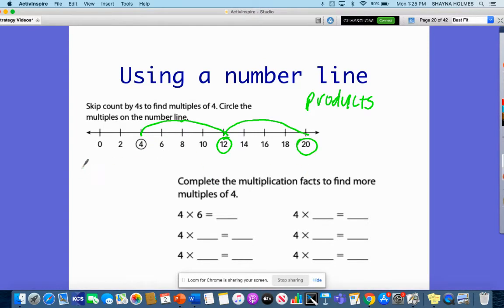Four is a multiple of four, because four times one is four, four times three is 12, and four times five is 20. All of these are multiples of four.